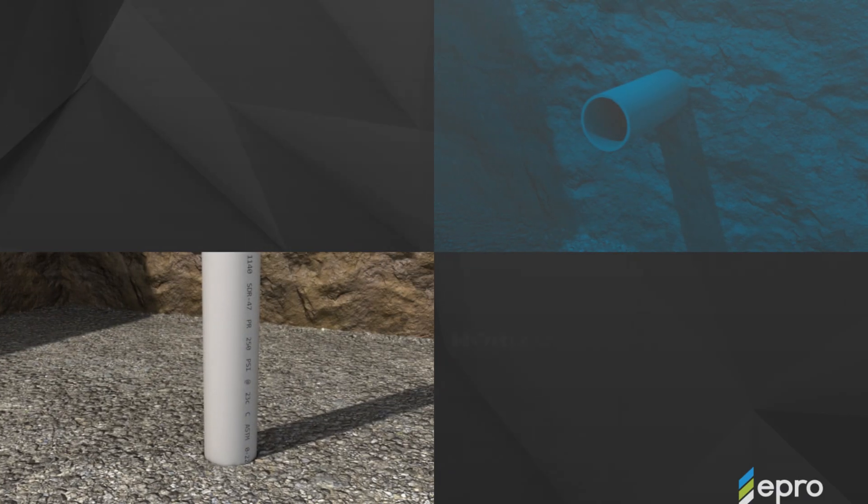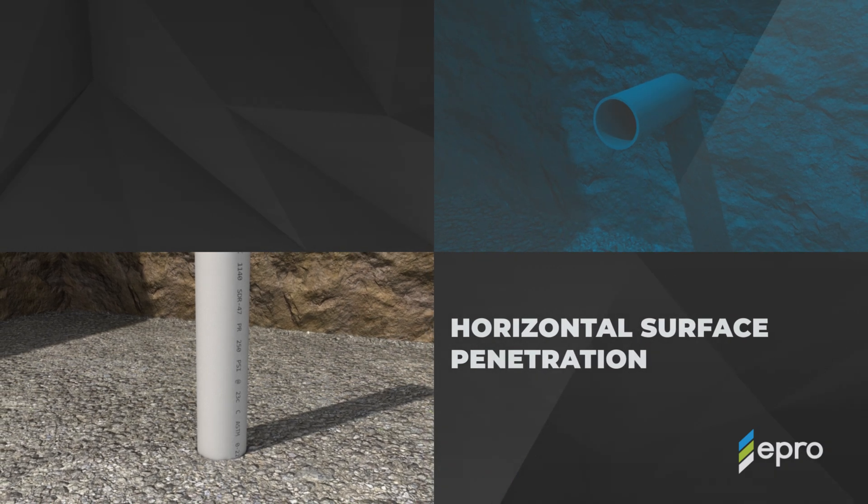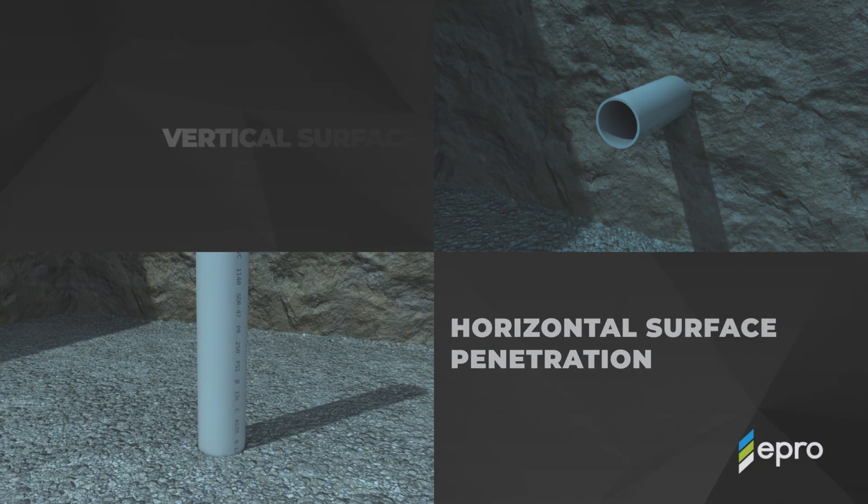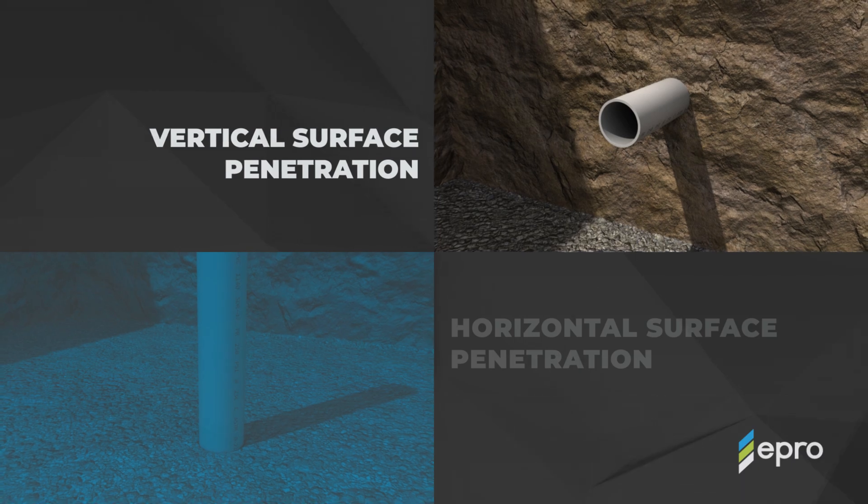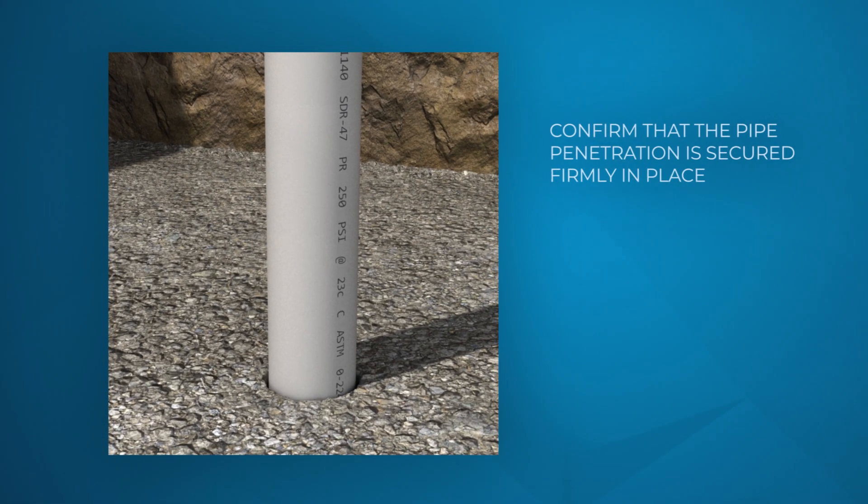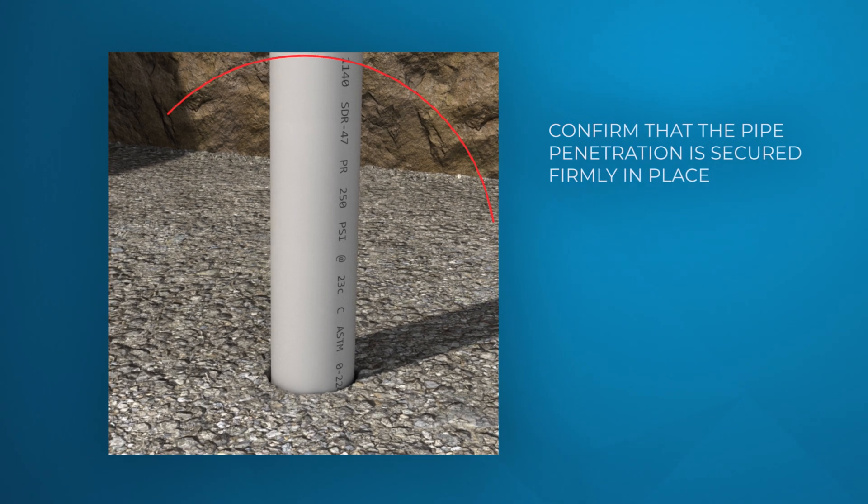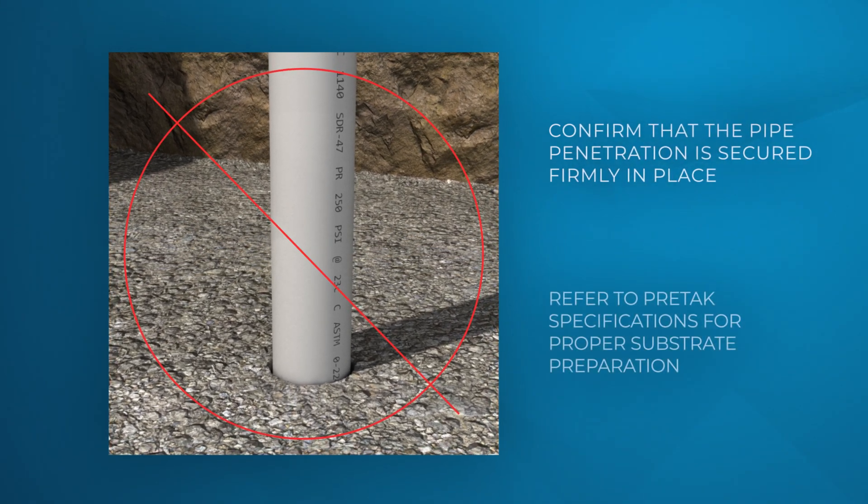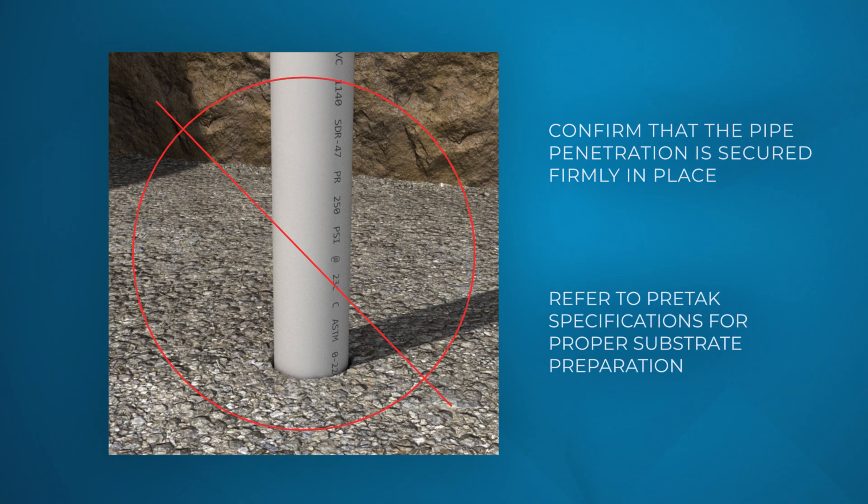For the purposes of this video, we will demonstrate how PRETAC is sealed around a horizontal penetration. A penetration on a vertical surface will follow the same process. To properly seal a pipe penetration, first check to confirm that the pipe penetration is secured firmly in place. Refer to PRETAC specifications for proper substrate preparation.